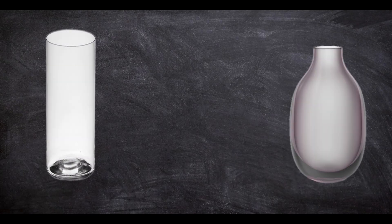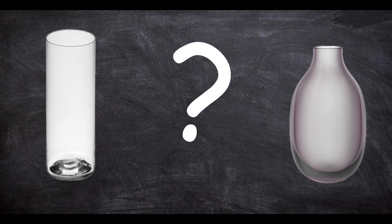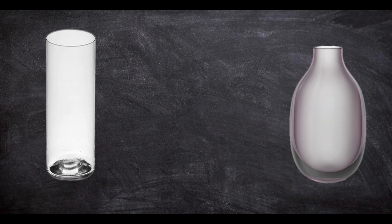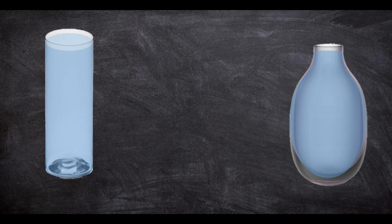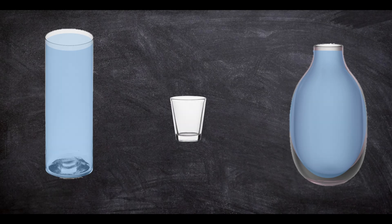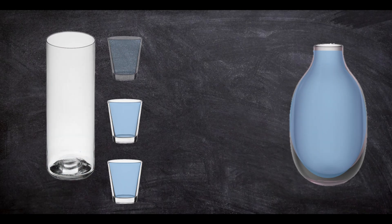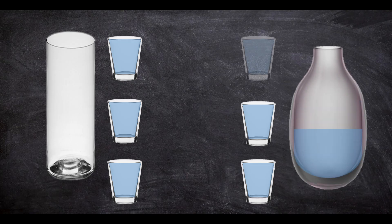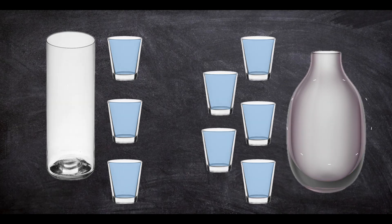Sometimes it's not that easy. Let's look at these two containers and conduct a little test to see which has the greater capacity. Before we start, make a prediction — have a guess as to which holds the most liquid. I'm going to fill both containers to the top and see how many times each fills up this small glass. The first container filled my small glass three times. The second container filled it five times — so the second container has the greater capacity.